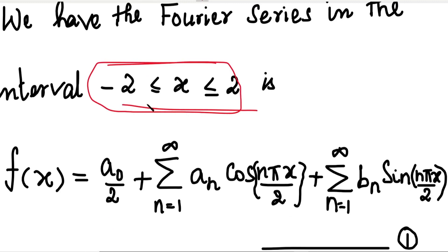First, we will check whether the function is odd or even. Because if the function is even, then bₙ = 0, so we do not need to calculate bₙ. If the function is odd, then a₀ and aₙ equal 0, so in the series we only substitute bₙ. This saves time. So let's check whether the function is odd or even.